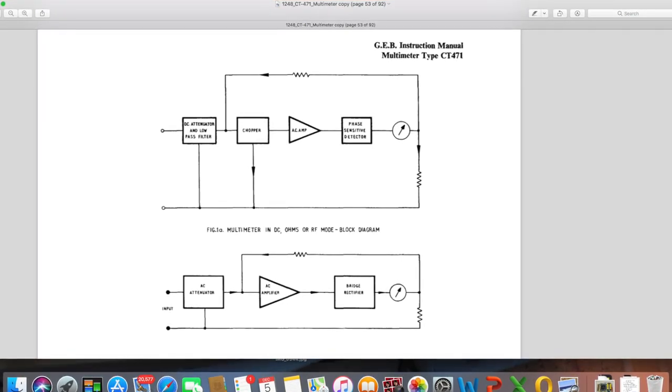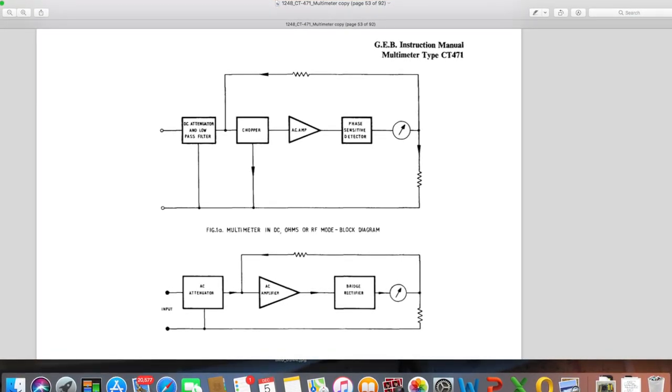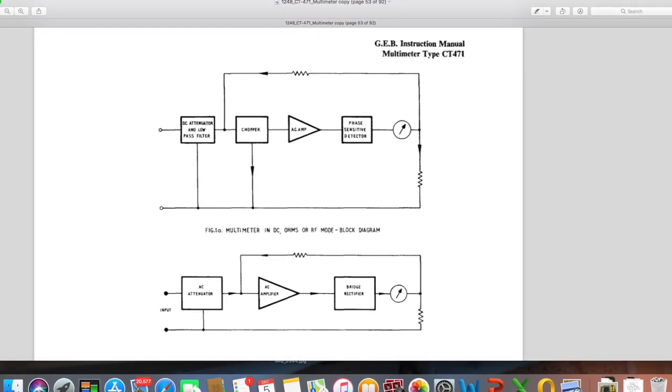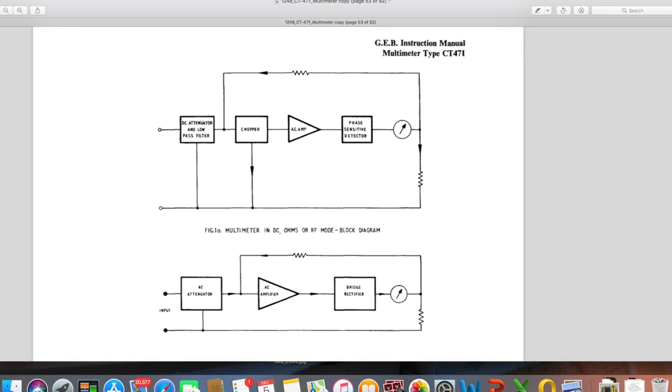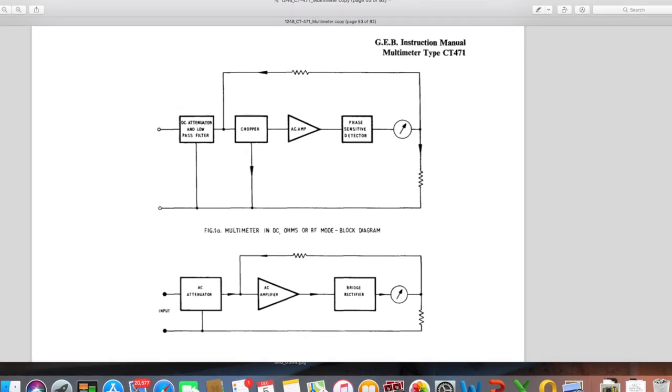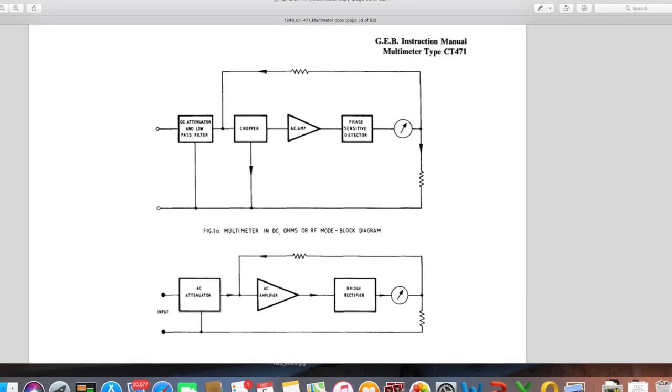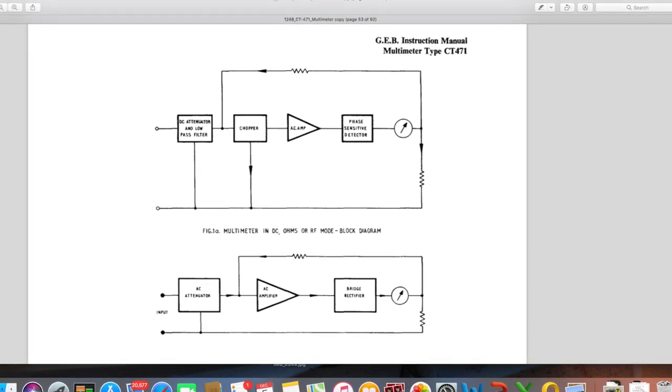On further research, it's actually a square wave not a triangular wave, and that then goes into an AC amplifier which I think is going to be the area of concern or the area of interest that we need to have a look at, probably the chopper and the AC amplifier. And then you've got a phase sensitive detector and then that goes to the meter.